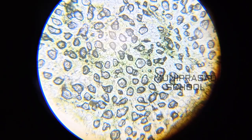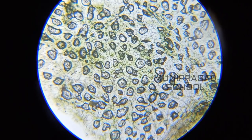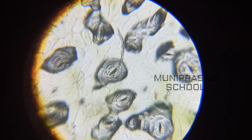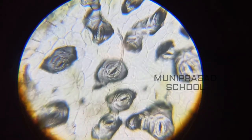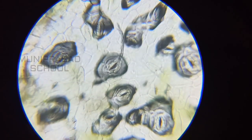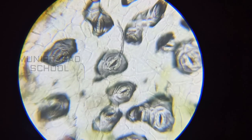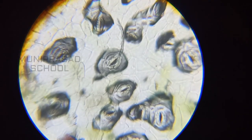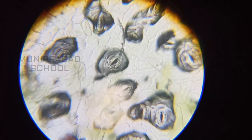Let us zoom and see. Yes, these stomata are enclosed by two kidney-shaped cells. They are called guard cells.